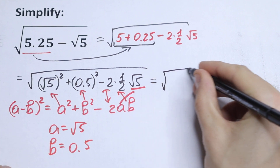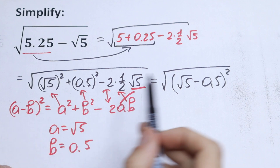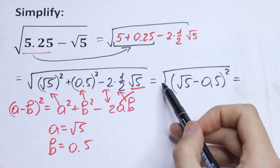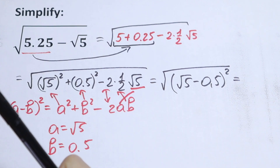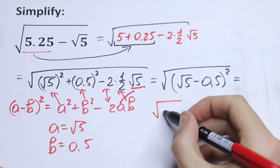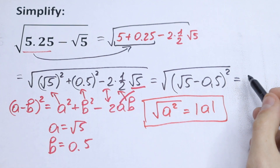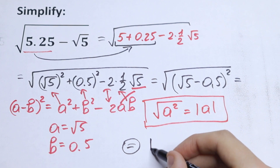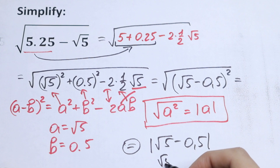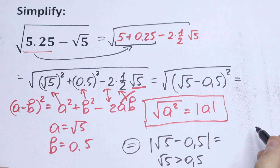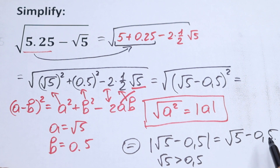So we will have that this equals the square root of (square root of 5 minus 0.5) squared — our formula (a minus b) squared. We all know that the square root of a quantity raised to the second power equals the absolute value of that quantity. So the result is the absolute value of (square root of 5 minus 0.5). Since square root of 5 is greater than 0.5, the absolute value gives a plus sign, and our answer is square root of 5 minus 0.5.